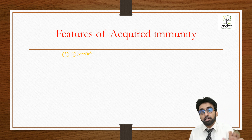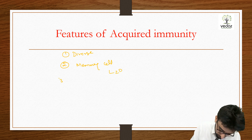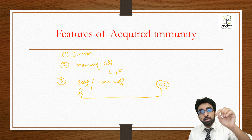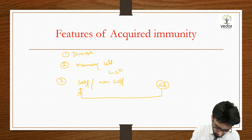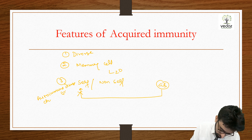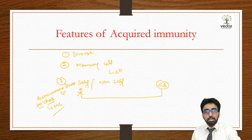These are the features of acquired immunity. It is diverse — as many pathogens come, that many antibodies can be made. It has memory cells, which enable the secondary response. Third, it has the capability to differentiate between self and non-self — the antibodies formed in the body will not attack self cells. If our body's antibodies start killing our own cells, it causes a disease called autoimmune disease, like Myasthenia Gravis, where antibodies are made against acetylcholine receptors.